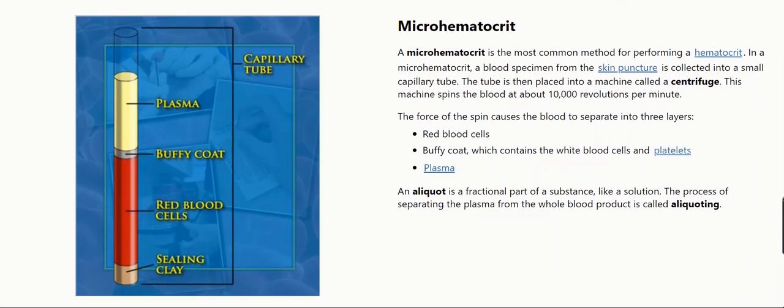A micro hematocrit is the most common method for performing a hematocrit. In a micro hematocrit, a blood specimen from a skin puncture is collected into a small capillary tube. The tube is then placed into a machine called a centrifuge.